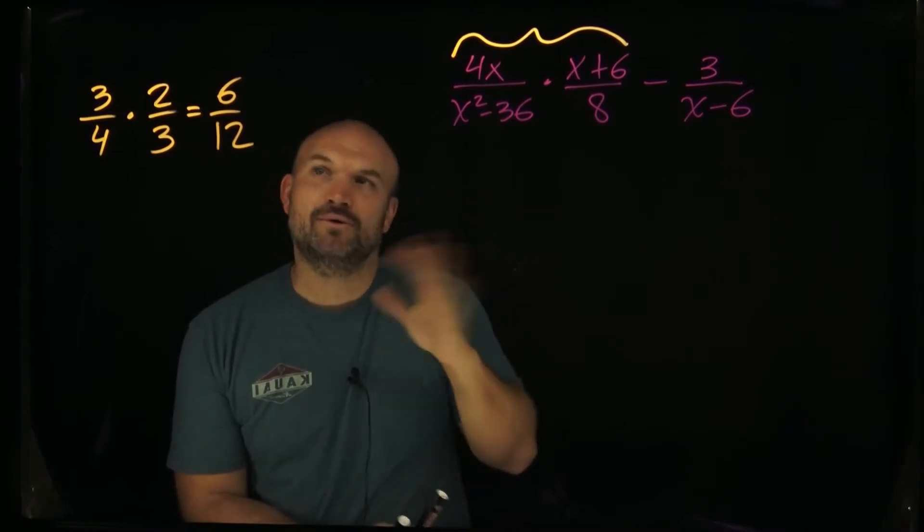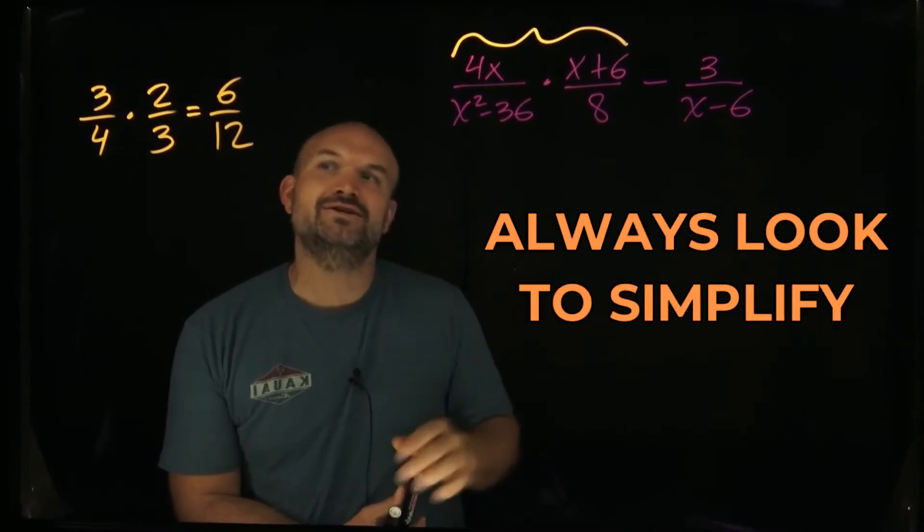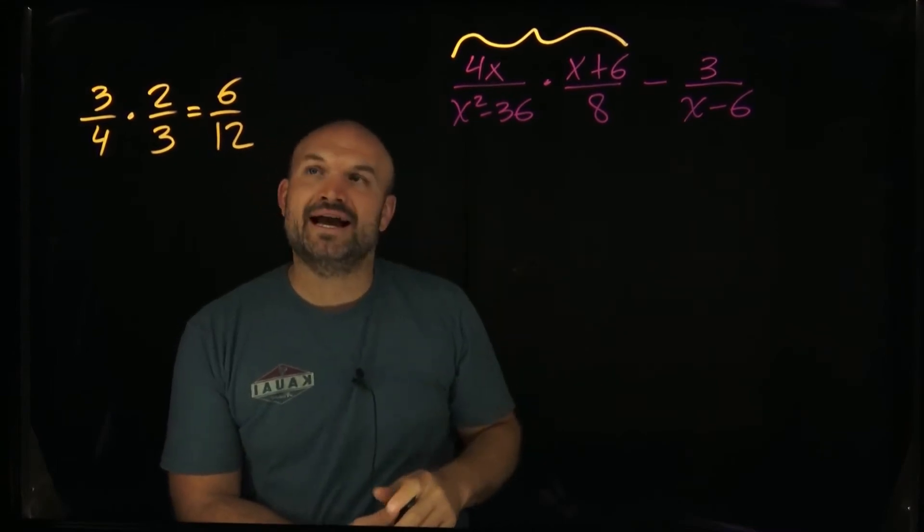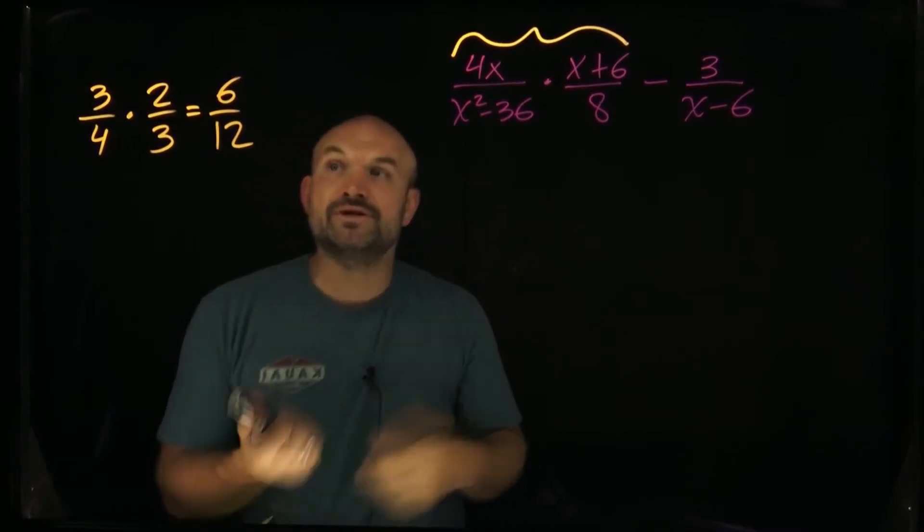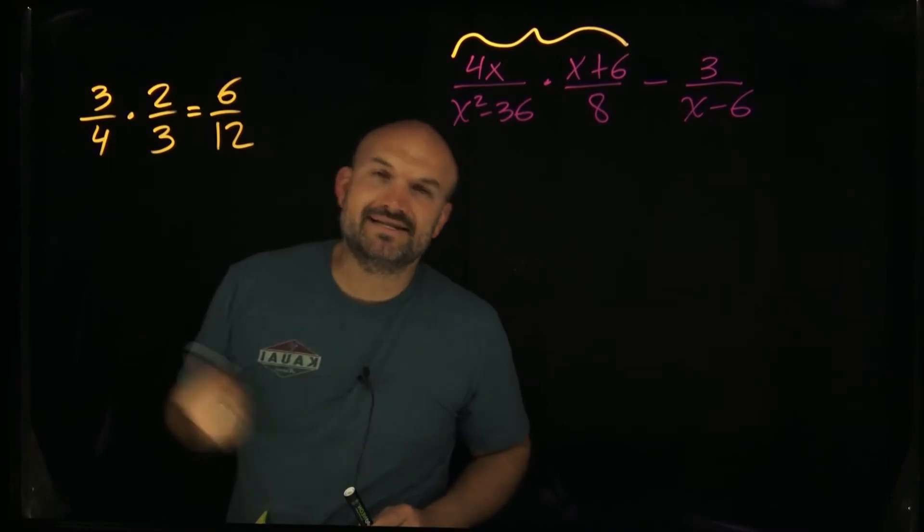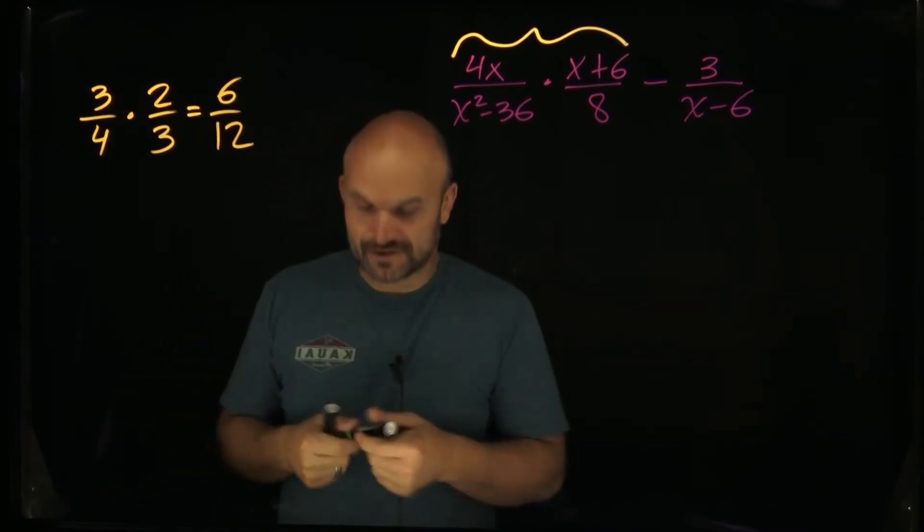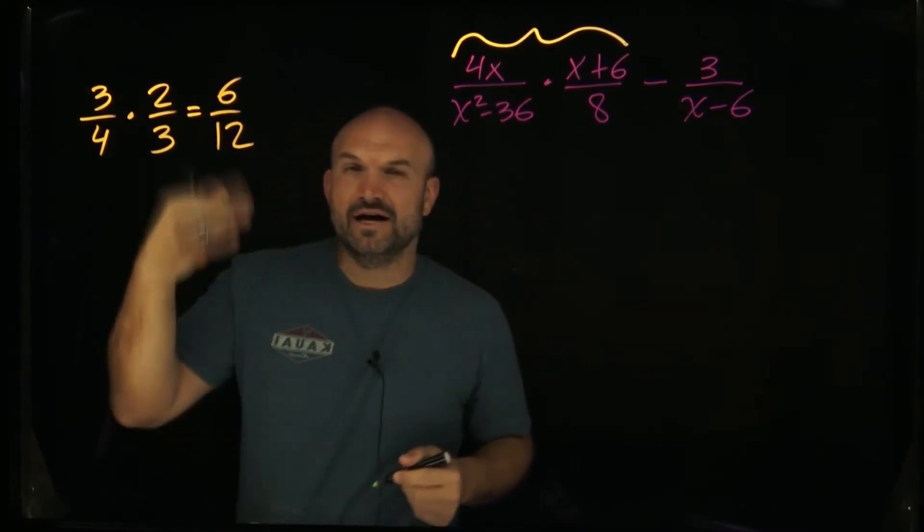When we're multiplying fractions or doing any fraction operation, always look to simplify. What is something in the numerator and the denominator that I can divide into both of them that I can reduce this fraction? Hopefully you recognize I can divide a 6 in the numerator and denominator, so therefore this can be a simplified version of just one half.